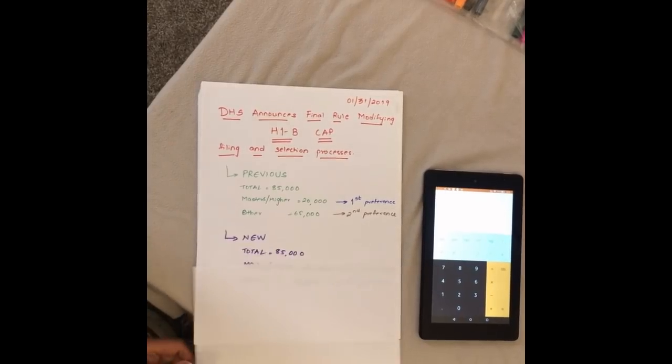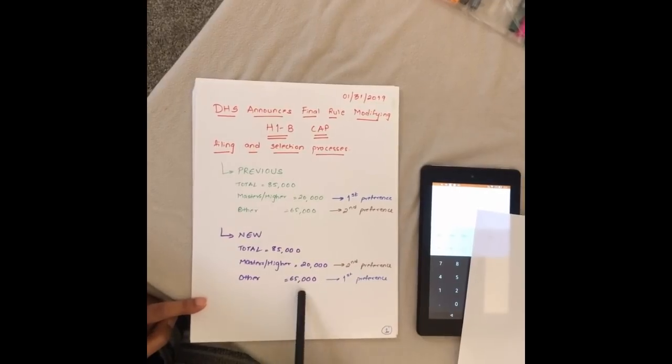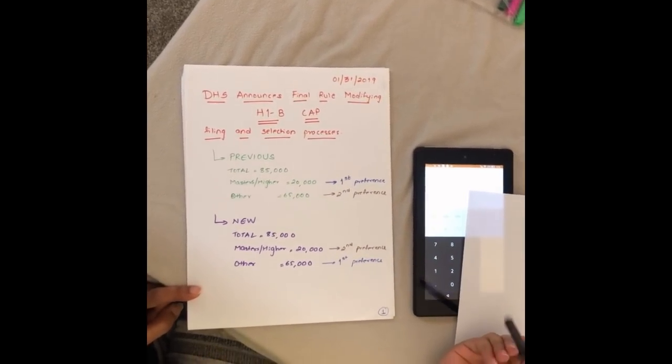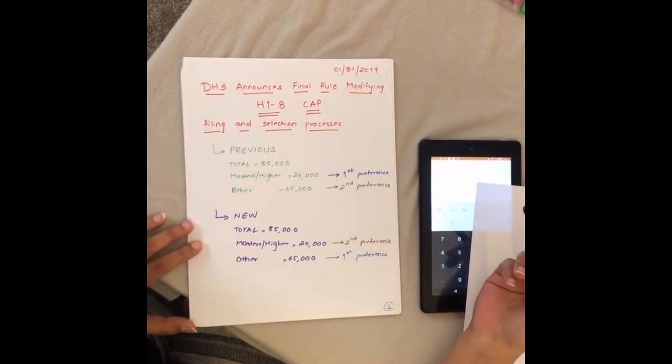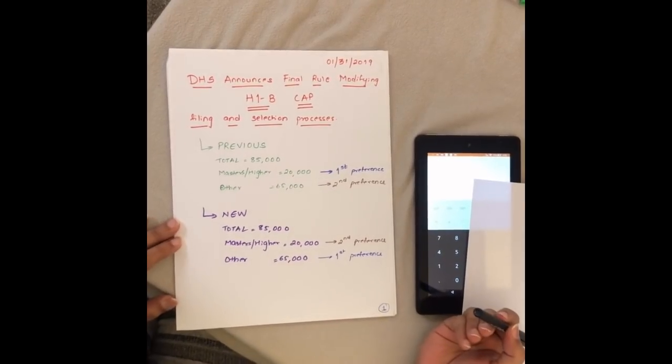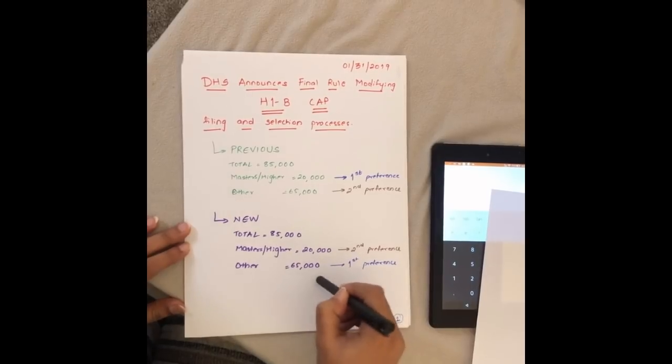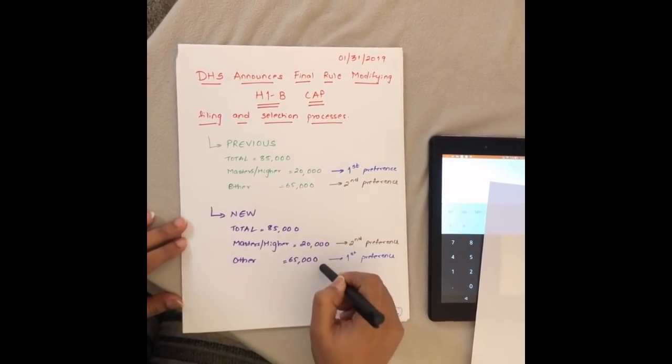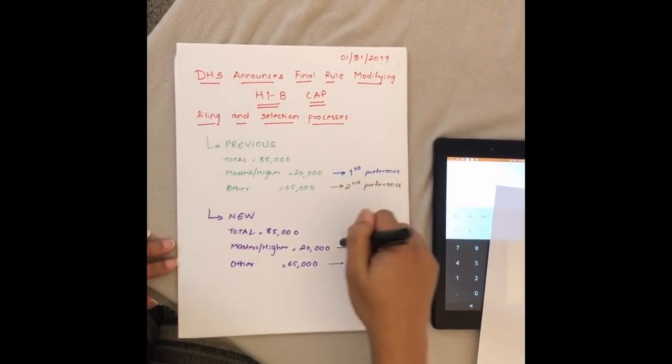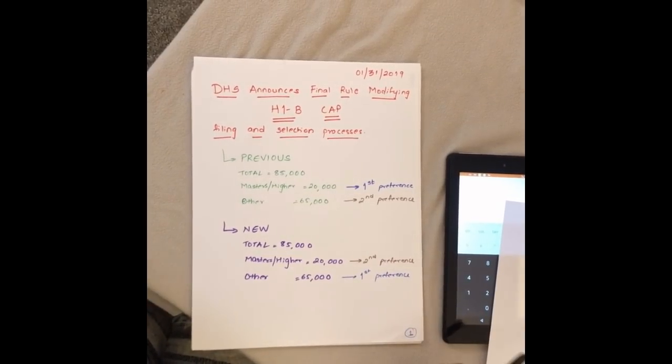Per the H1B cap announced today, January 31st, the new rule states the numbers do not change but the preferences change. Anyone who applies for H1B and is a master or higher education student who studied in USA gets first preference in the 65,000 slot, and then if not picked up there, goes into the 20,000 slot.